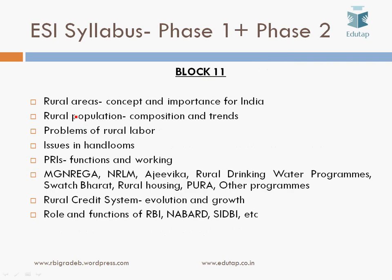Block 10 on ecology and climate change is very important. Block 11 covers rural development — the concept and importance of rural areas for India, the composition and trends of rural population, problems of rural labor, issues in the handloom sector, Panchayati Raj institutions and their functions, schemes like NAREGA, National Rural Livelihoods Mission (Ajeevika), drinking water programs, Swachh Bharat, rural housing, rural credit system, and the functions and role of institutions like NABARD, RBI, and SIDBI in rural development.